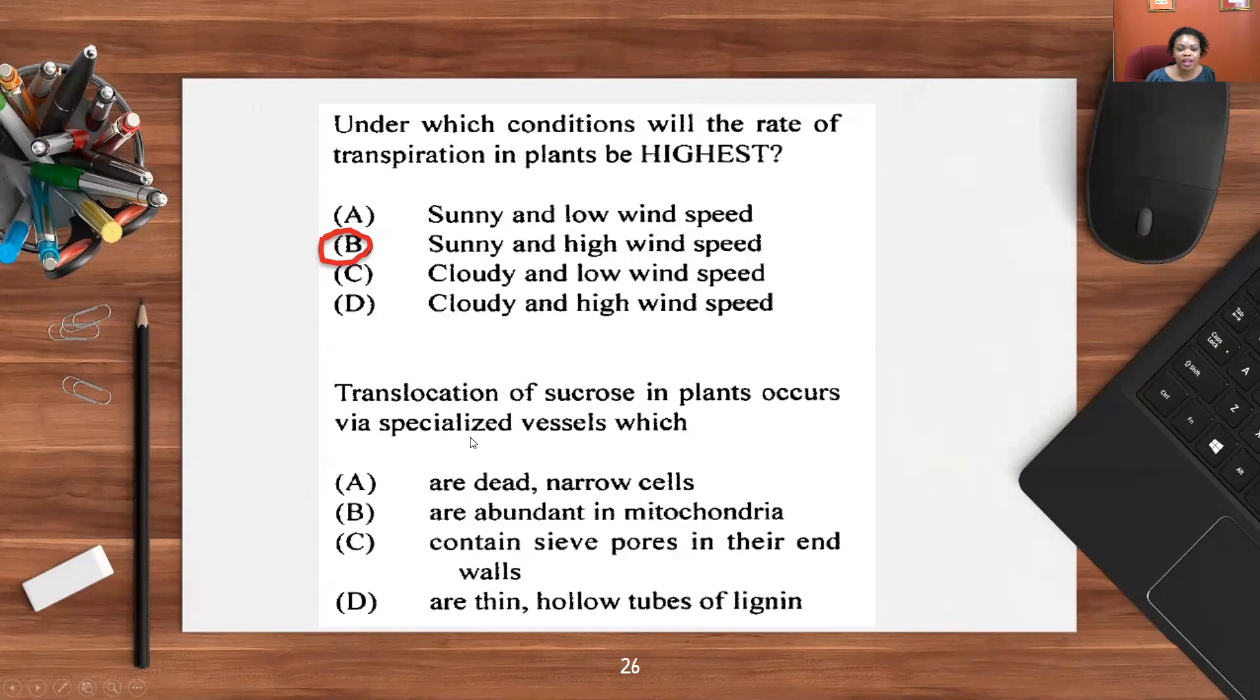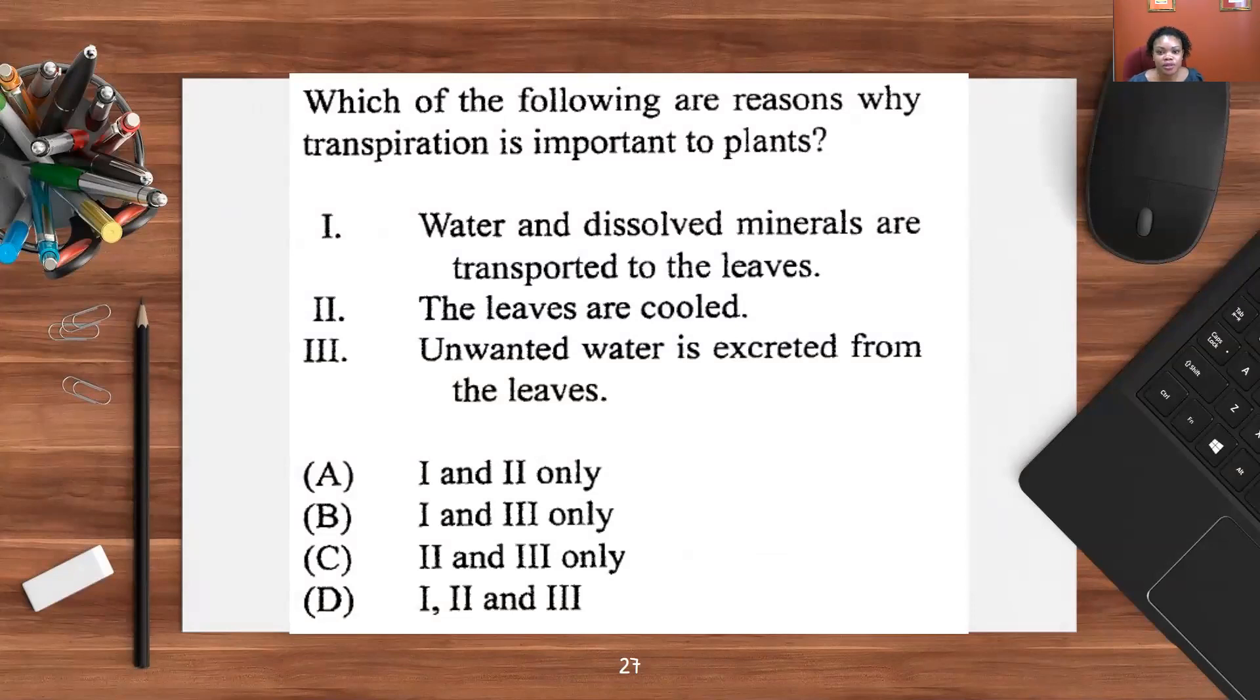Translocation of sucrose in plants occurs by a specialized vessel of which? It's translocation, not transpiration. Dead and narrow cells, we can rule that out. Thin and hollow tubes, we can rule that out because that would be the xylem. Translocation takes place in the phloem. Abundant mitochondria would be the companion cell, but instead, C is the best response: contains sieve pores in their end walls. Which of the following are the reasons why transpiration is important to plants? Water and dissolved minerals are transported to the leaves. The leaves are cooled. Unwanted water is excluded from the leaves. The response is one and two, so A.